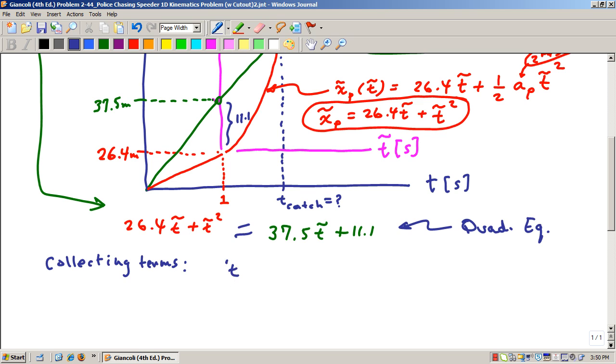So we'll collect terms first of all. I'll leave the T-tilde squared there. That's that term. And then I'll bring this T-tilde over to the left-hand side of the equation. And so, by doing that, it's going to be minus.